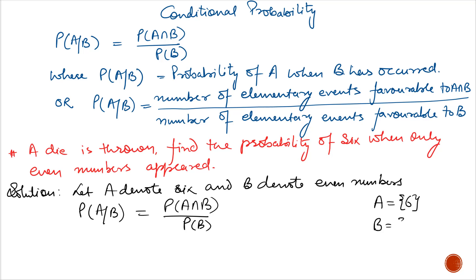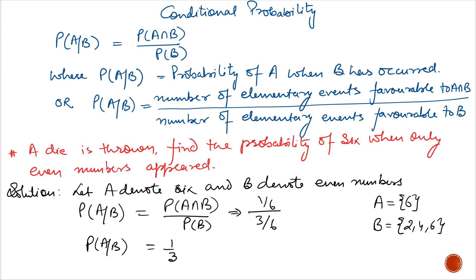A is only number 6, and B is the even numbers which are 2, 4, 6. The common between A and B is 6. So probability of A intersection B is 1/6 and the probability of B is 3/6. So the required probability is 1/3. Or we can say that out of 3 even numbers, only one number is 6. So the probability of A given B is 1/3.